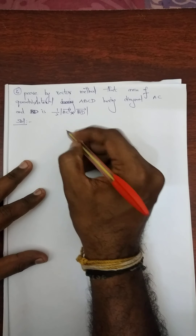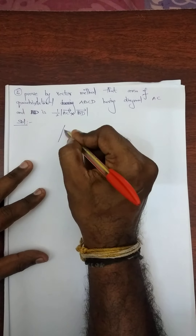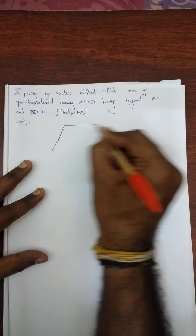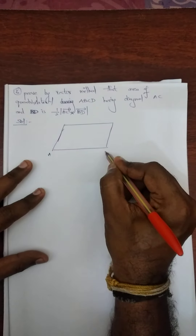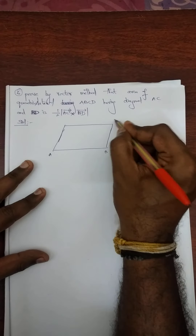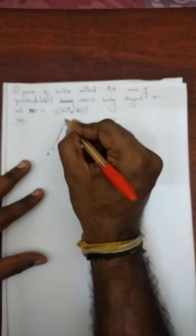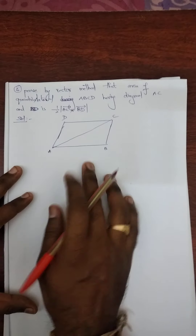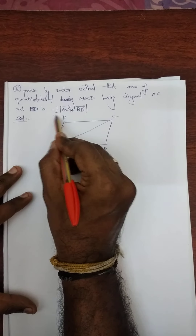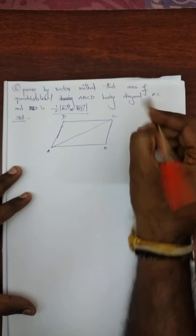First I am going to draw a quadrilateral ABCD. This one is A, B, C and D. I will draw only one diagonal which connects AC. So now I need to prove this — how I can prove diagonal of AC and diagonal of BD.